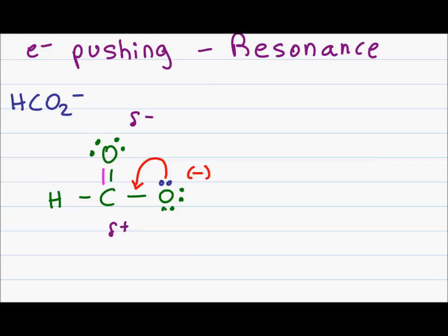As a result, carbon will have too many bonds. To avoid this instability, carbon will kick out one of the bonds connecting the second oxygen. I will show this by starting my arrow at the bond and ending at the oxygen, showing that the bonding electrons collapse to form a lone pair on the oxygen.